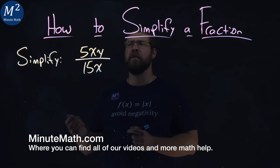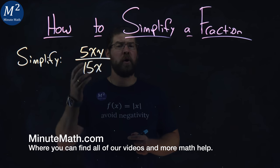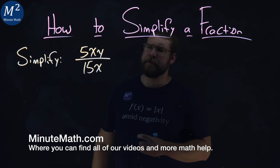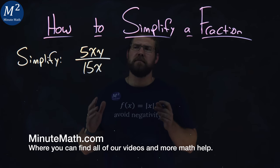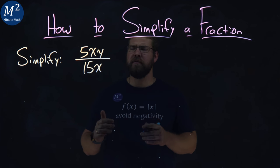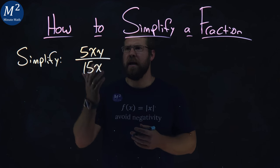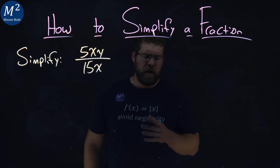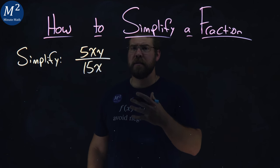We're given this problem: simplify 5xy over 15x. Now one thing you might notice that's different from our previous examples is there are variables - we've got x, y, and an x. But the process is still the same.